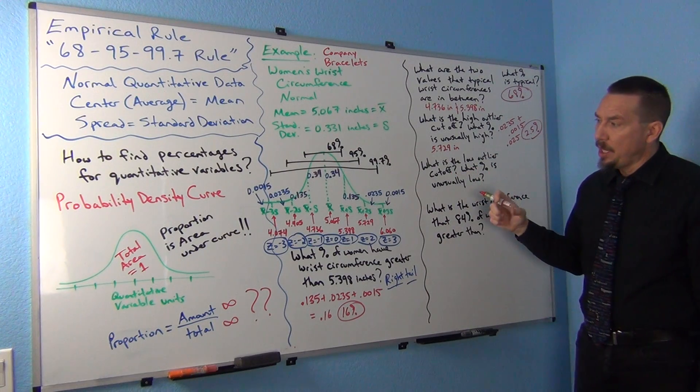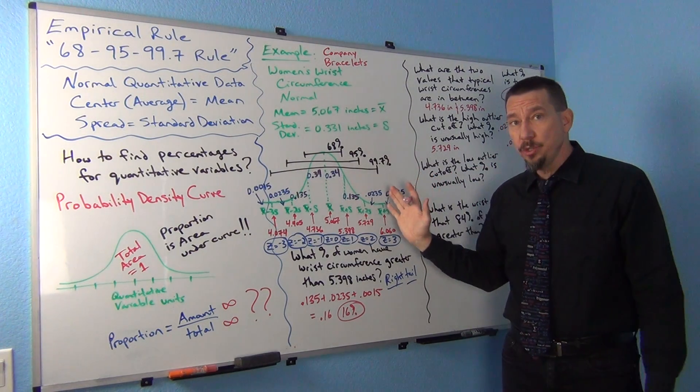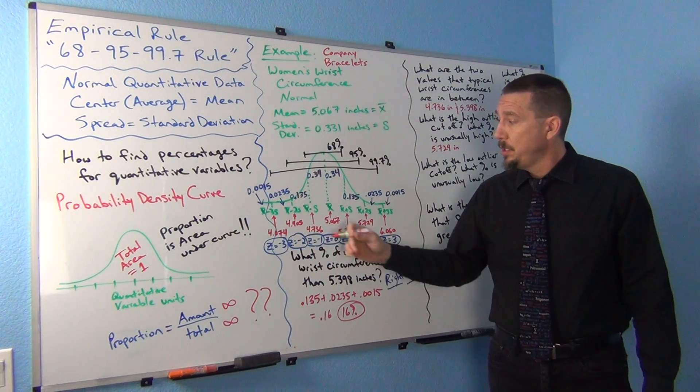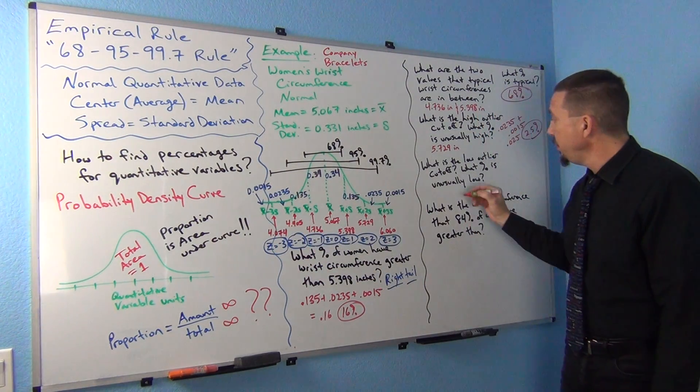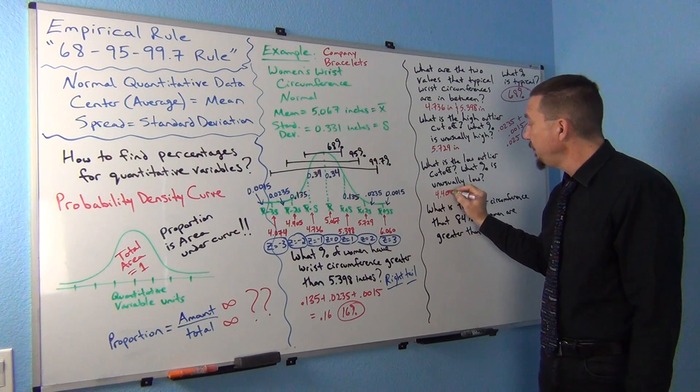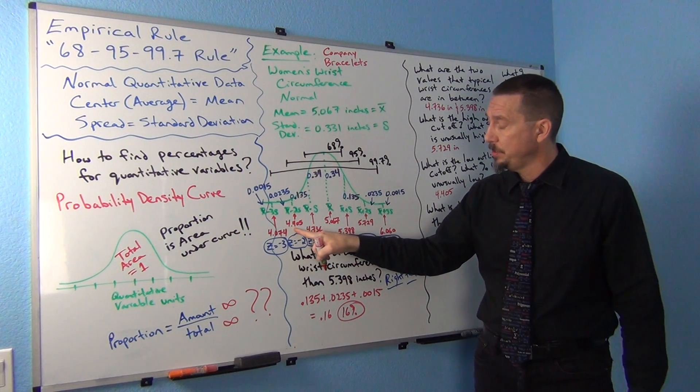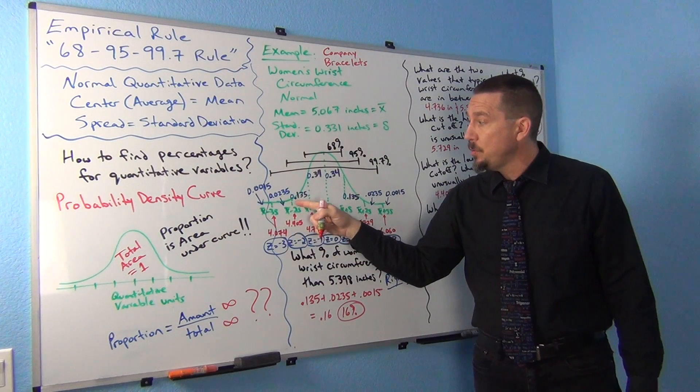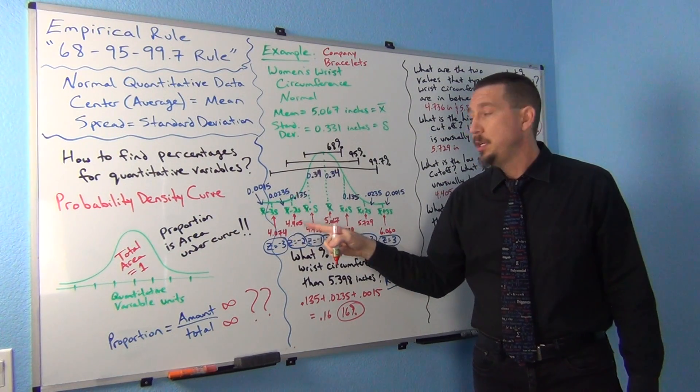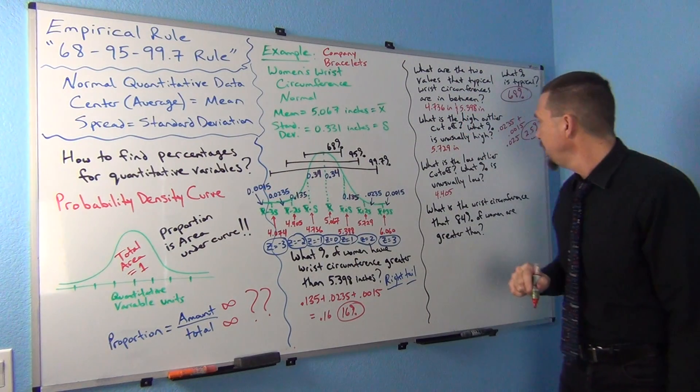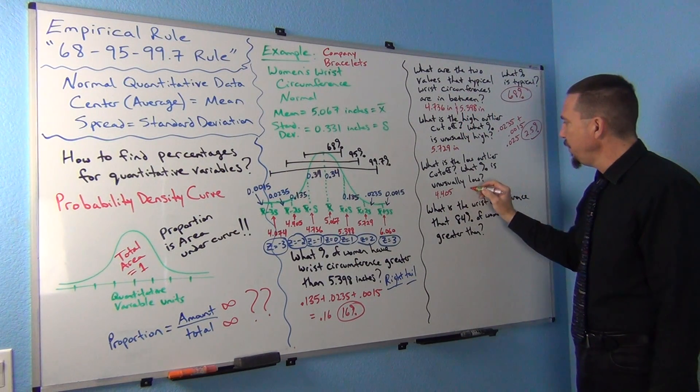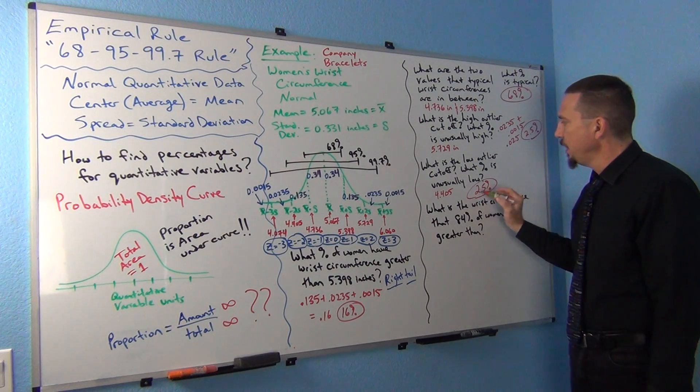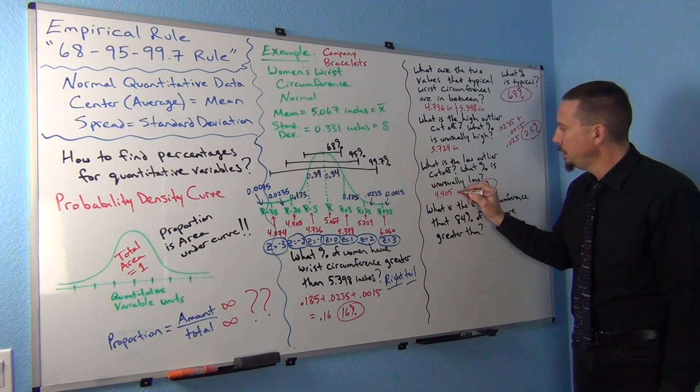What about the unusual low cutoff? That was two standard deviations below the mean, or a z-score of negative 2. So for that, the answer is going to be 4.405, we can see on the chart. And notice what percentage would be unusually low, lower than the low cutoff. There's two sections again. So this one's also going to be 2.5%, the bottom 2.5%.